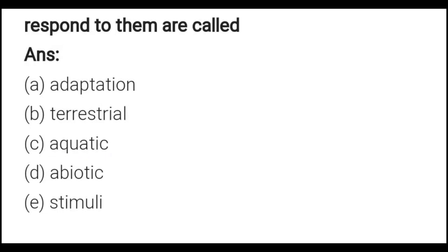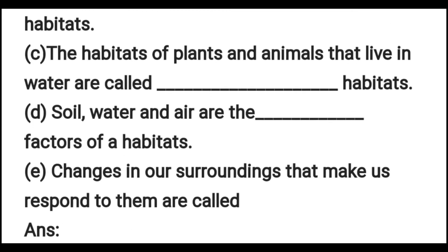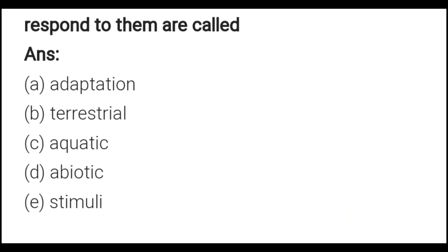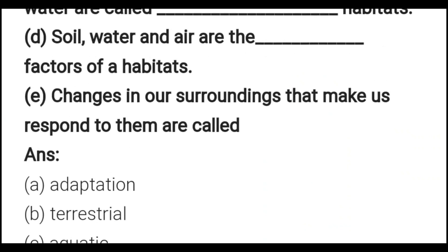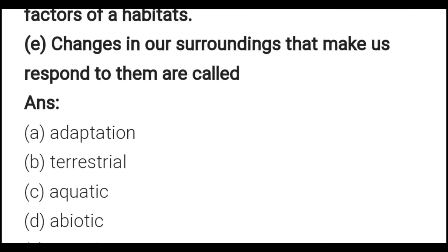Part D: The soil, water, and air are the blank factors of a habitat — write: abiotic. Part E: Changes in our surroundings that make us respond to them are called blank — the answer to be filled in.